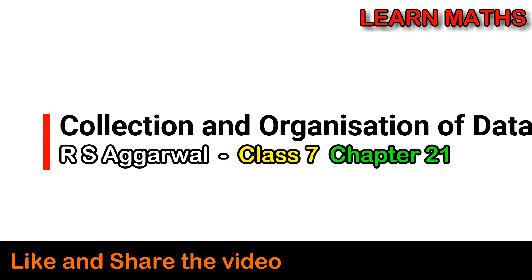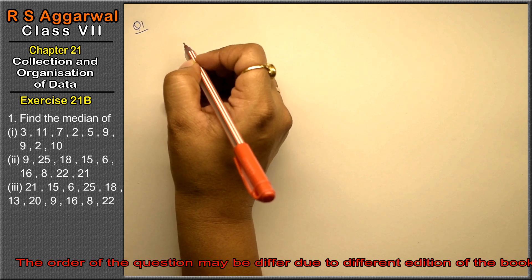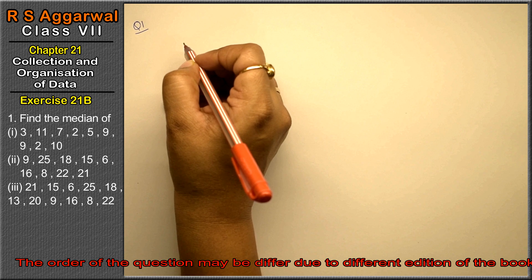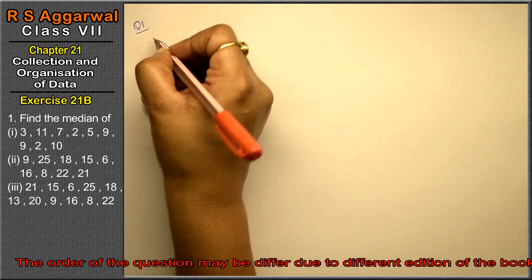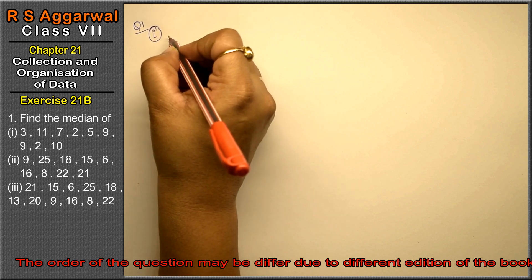Let's do question number first of exercise 21B, that is collection and organization of data. Question number first is find the median. First part is we have given numbers and we have to give the median.